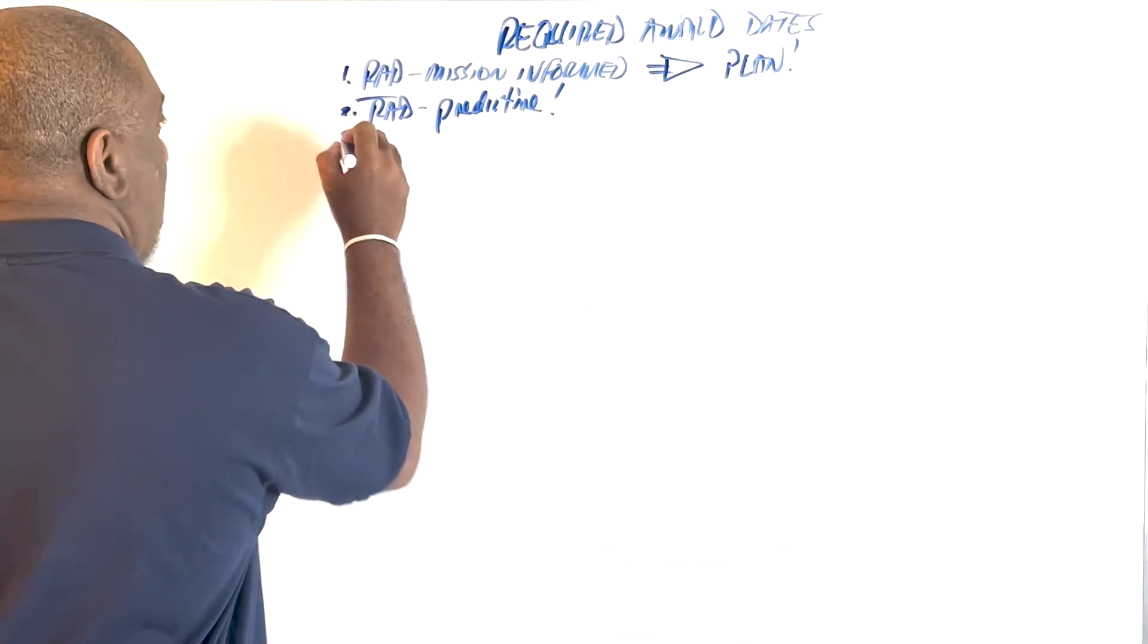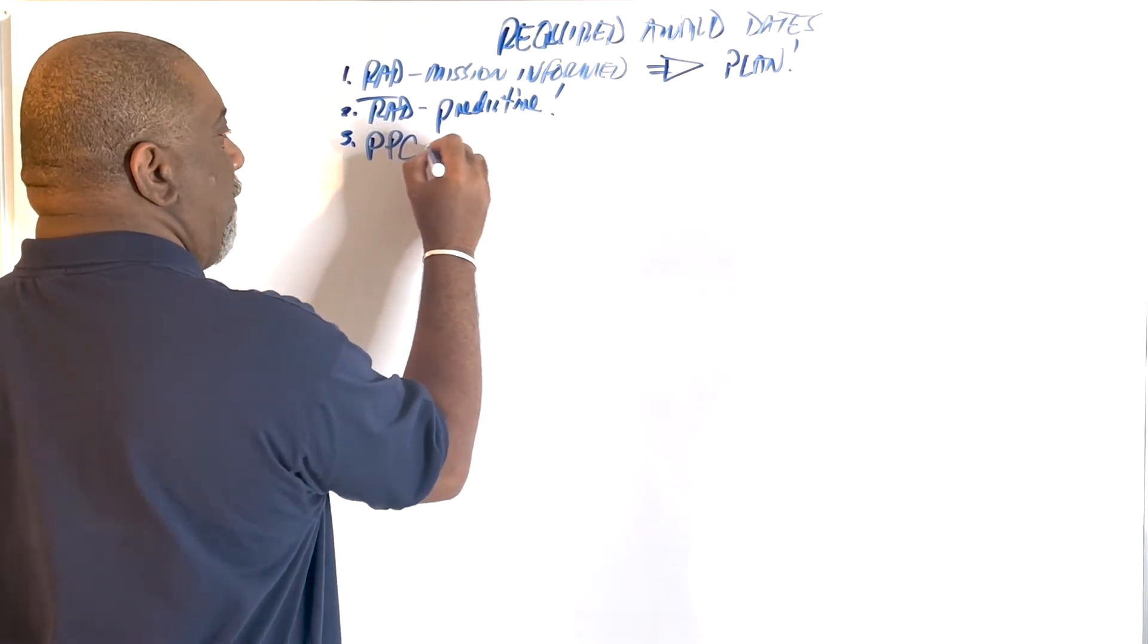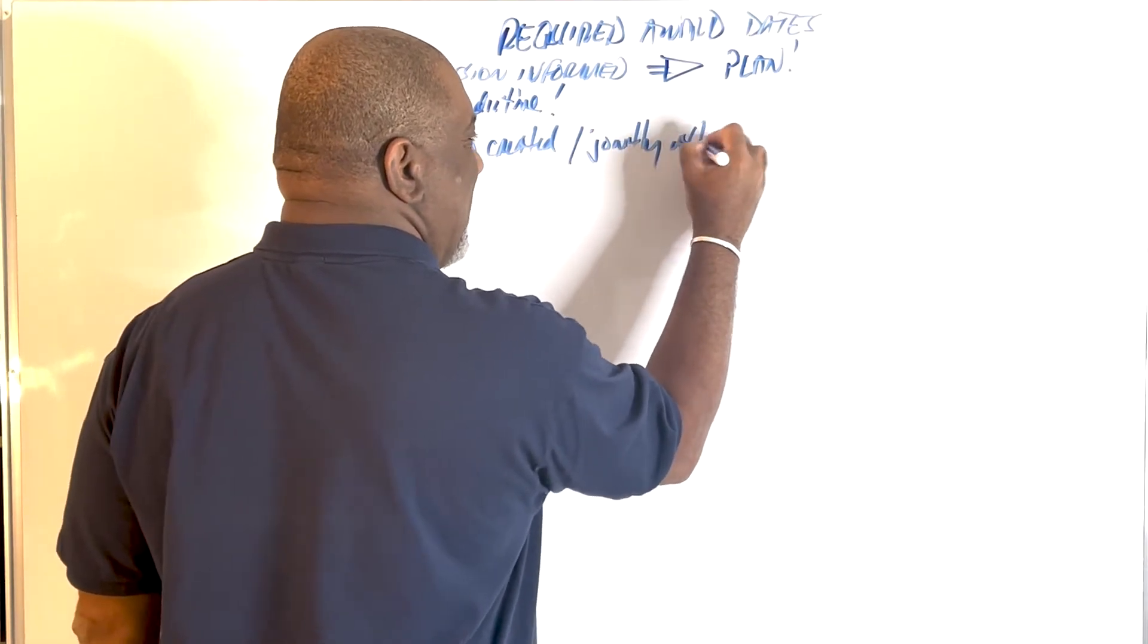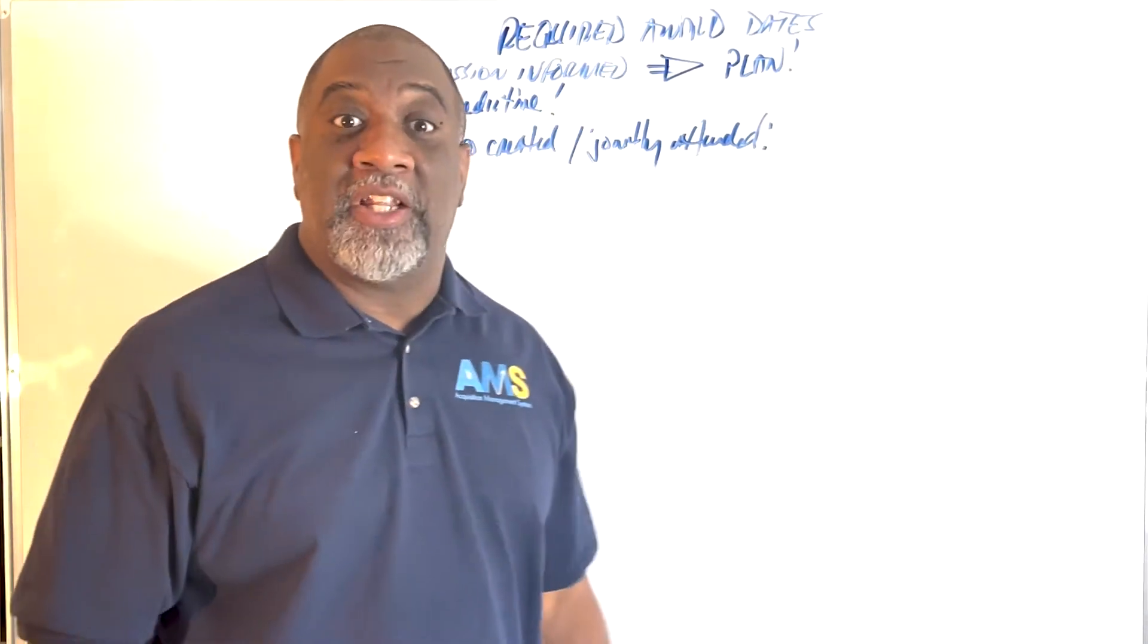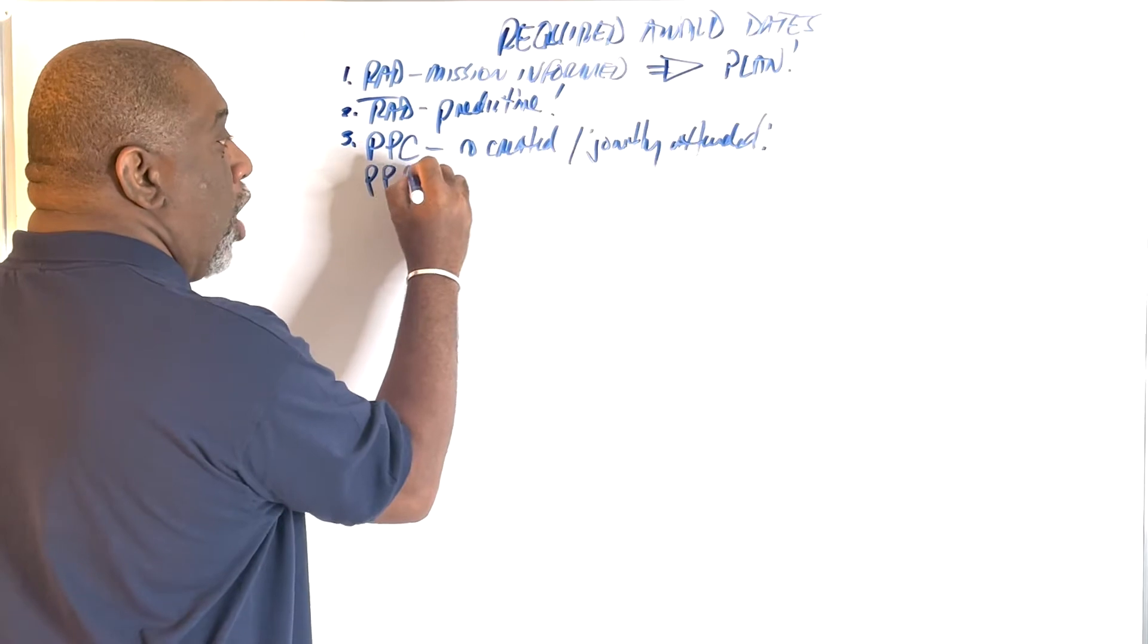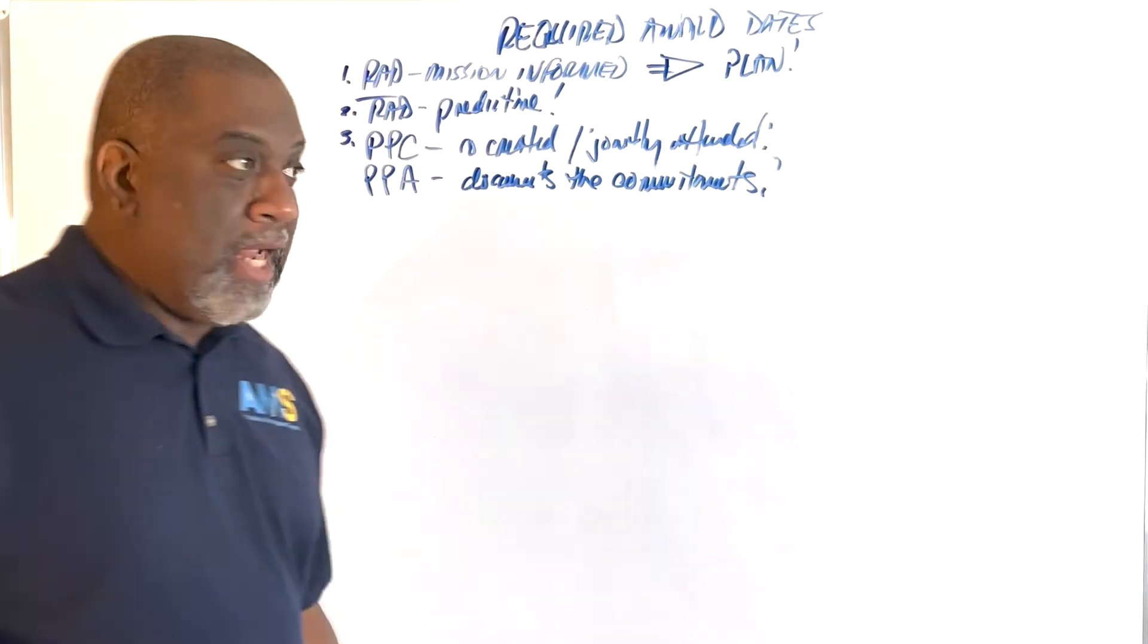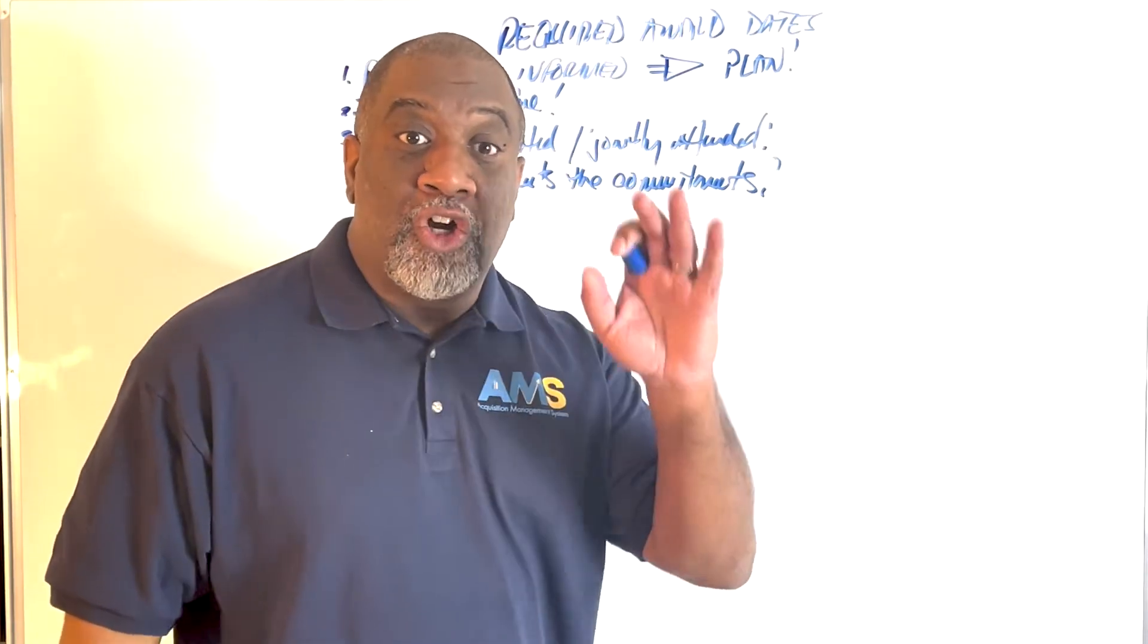So let's talk about how do we get to required award dates. We hope that your procurement planning conference is co-created and jointly attended. The team gets together and says, we got something to do. So it's co-created and jointly attended. And then your procurement planning agreement documents the commitments. Now you have an artifact that says, this is what we have agreed to do.